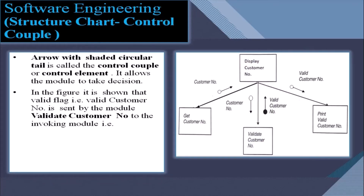Another symbol is used for a control couple. An arrow with a shaded circular tail is called the control couple or control element. It allows the module to take decisions. For example, a valid flag — that is, valid customer number — is sent by the module 'validate customer number' to the invoking module 'display customer number'.